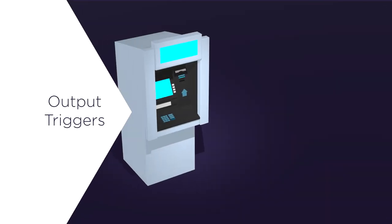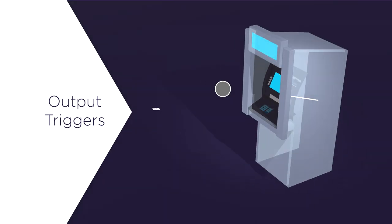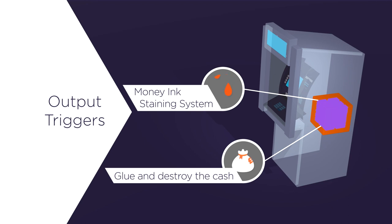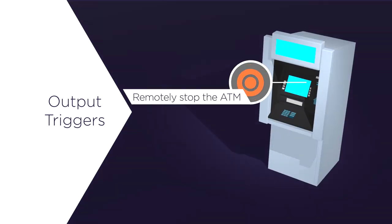Output trigger one is a strobe light. The second output is an audible two-way alarm. The third output trigger is a remote cash ink staining or glue system that can be activated by the controller. In the event of fraud detection, the fourth trigger allows the controller to remotely stop the ATM or render the ATM out of service.